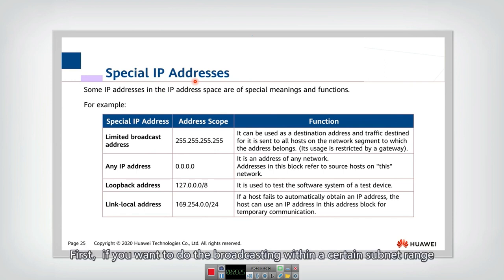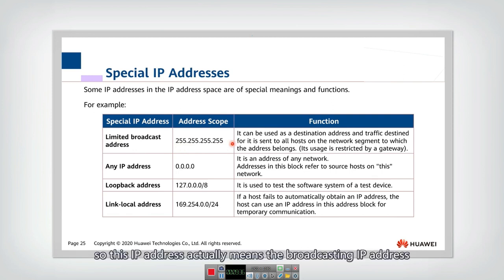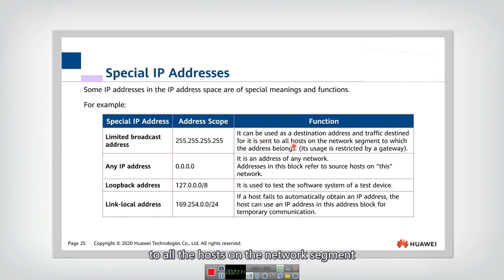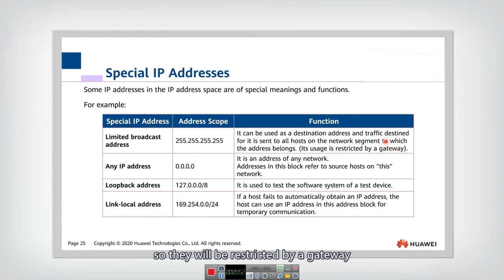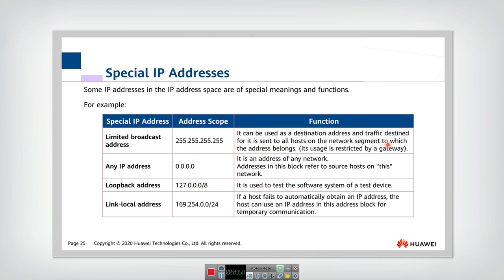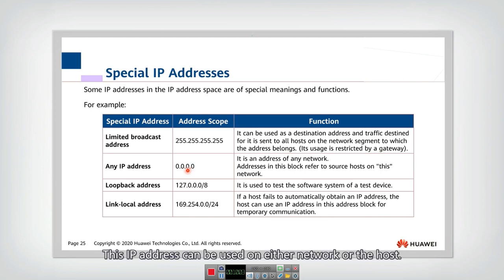There are also some special IP addresses to pay attention to. If you want to broadcast within a certain subnet, you can set all bits to 1 — this is the broadcast IP address, which allows packets to be broadcasted to all hosts on the network segment. These broadcasts are restricted by a gateway and cannot pass through it, but within a subnet they propagate freely.